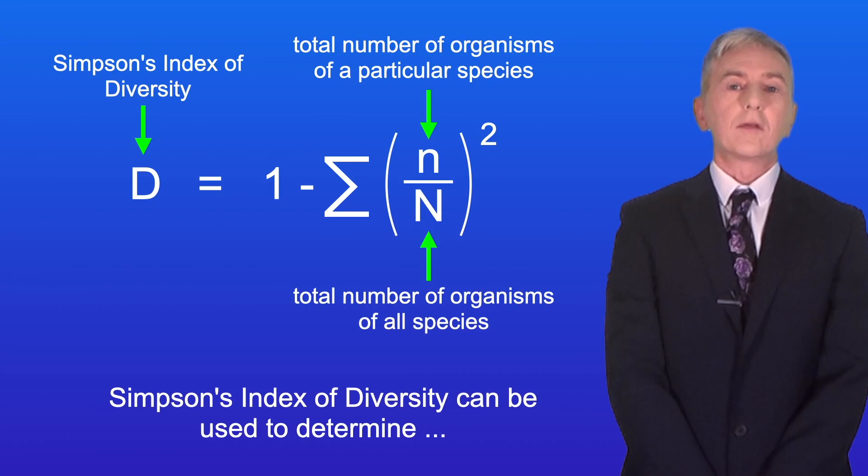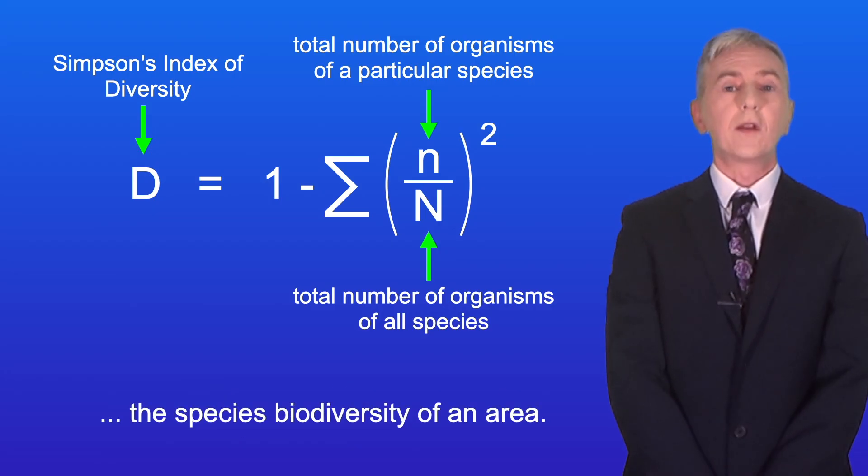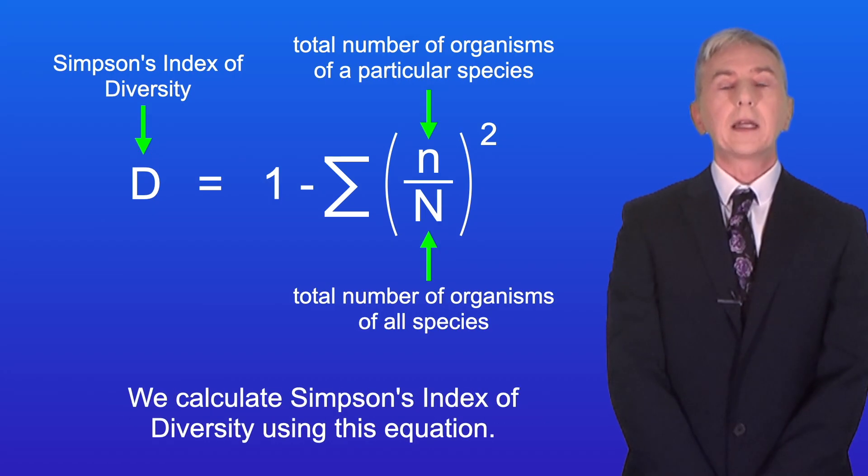Now Simpson's index of diversity can be used to determine the species biodiversity of an area. And we calculate Simpson's index of diversity using this equation.